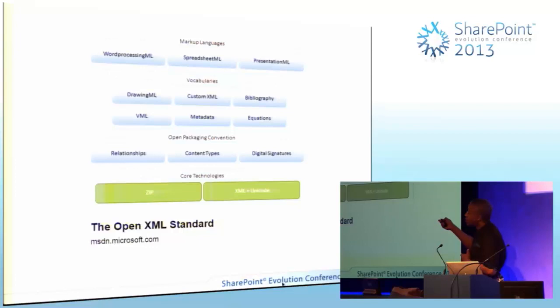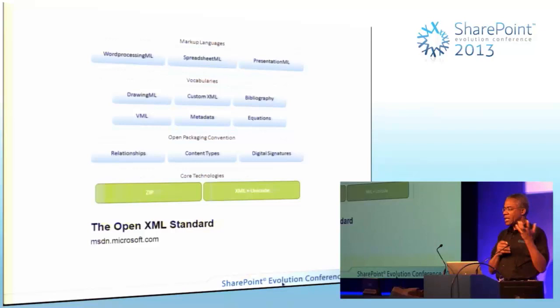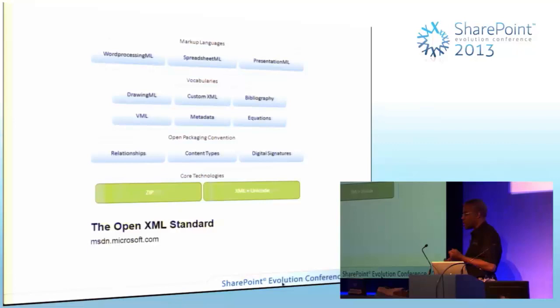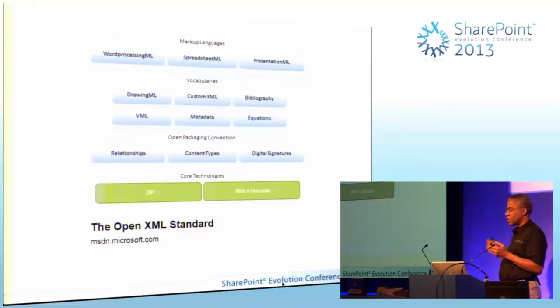We're going to talk about the model you use to generate documents. We'll start with a push model, where we have data and we're pushing it into the application - that's the first thing you come to when you look at how you might use OpenXML. But then you quickly realize that as the content becomes more complex, you need to go to a pull model because the template becomes overbearing. If you can shift to a model analogous to jQuery - where the browser handles the DOM and you're just telling it where to put stuff with some other layer feeding content in - that's a much more efficient and reusable model.